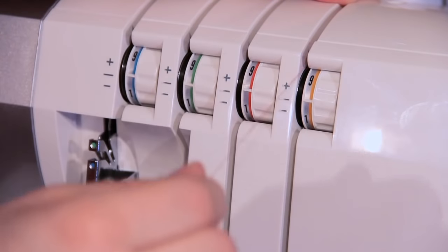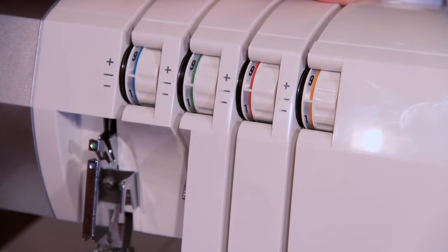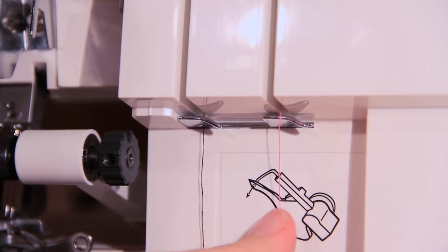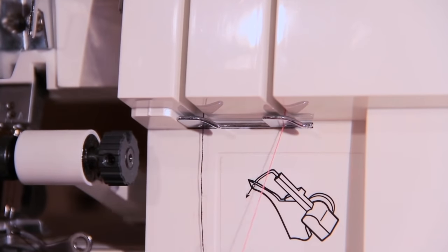Now it's time to do the lower looper, same as before, floss it right into the tension discs. As with the upper looper, use your lower looper thread and pass it behind this little metal hook right there.